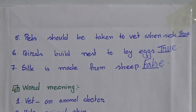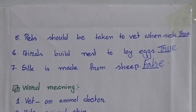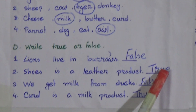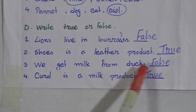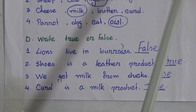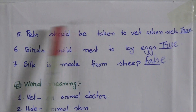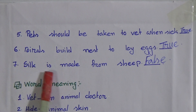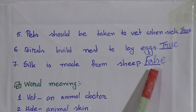Now let's revise Exercise D. Lions live in burrows — False. Shoe is a leather product — True. We get milk from ducks — False. Curd is a milk product — True. Pets should be taken to the vet when sick — True. Birds build nests to lay eggs — True. Silk is made from sheep — False.